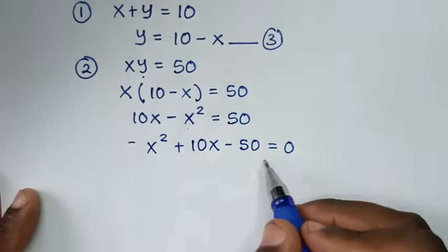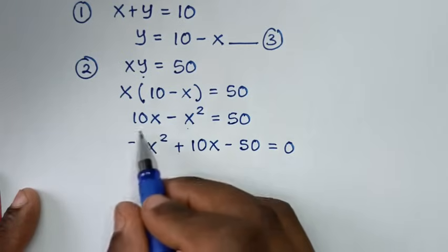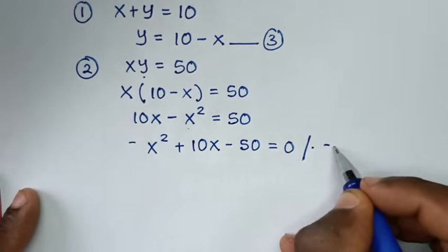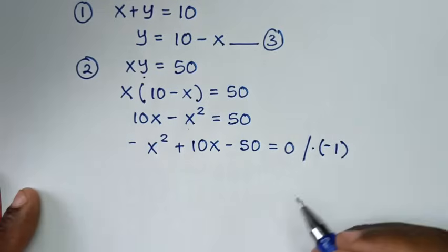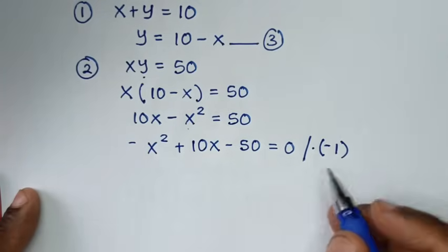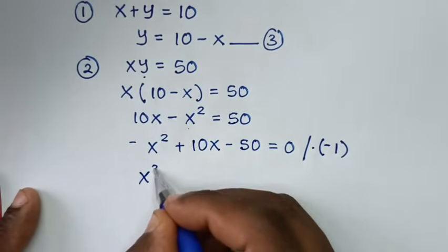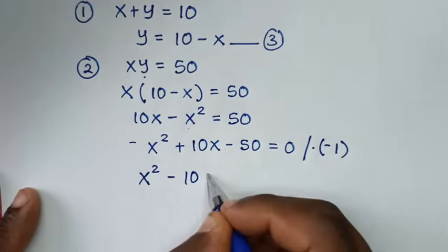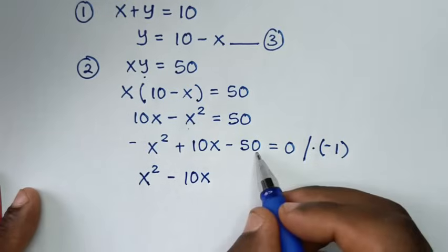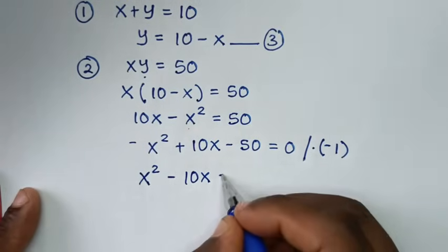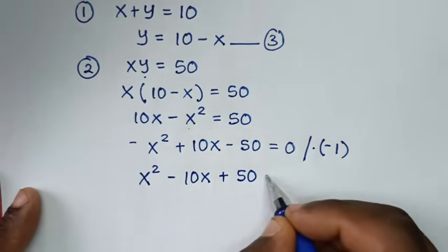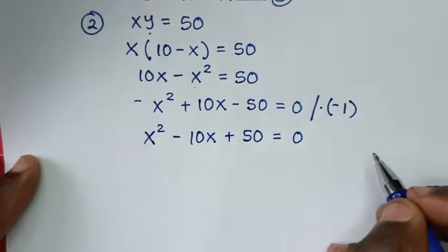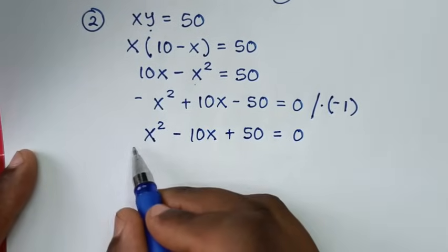From this equation, we want to make the leading term positive, so we multiply the whole equation by negative 1. So negative x squared times negative 1 is positive x squared, 10x times negative 1 is minus 10x, and minus 50 times negative 1 is positive 50, equal to 0.